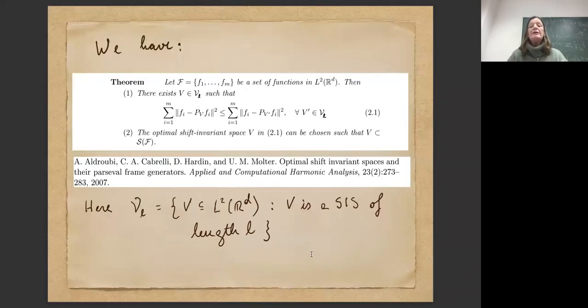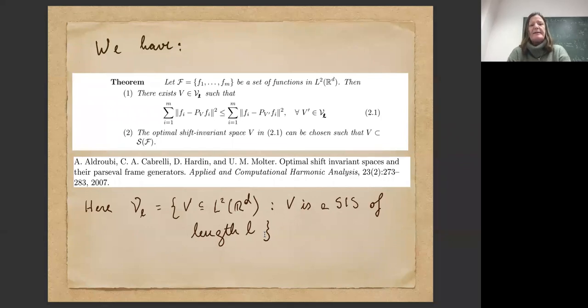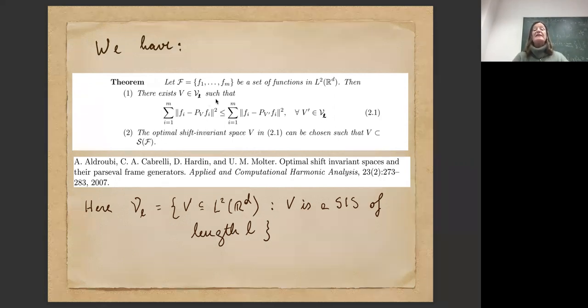So, using this lemma, we could prove the following theorem, that if we have a set of functions, then we can prove that there exists a finitely generated shift invariant space v, such that the projection of my data onto v, the distance between my data and its projection is less or equal than the distance of my data to any other shift invariant space of length L or smaller. And by the previous lemma, we can say the optimal shift invariant space can be chosen such that v is inside the span of f and its translation.